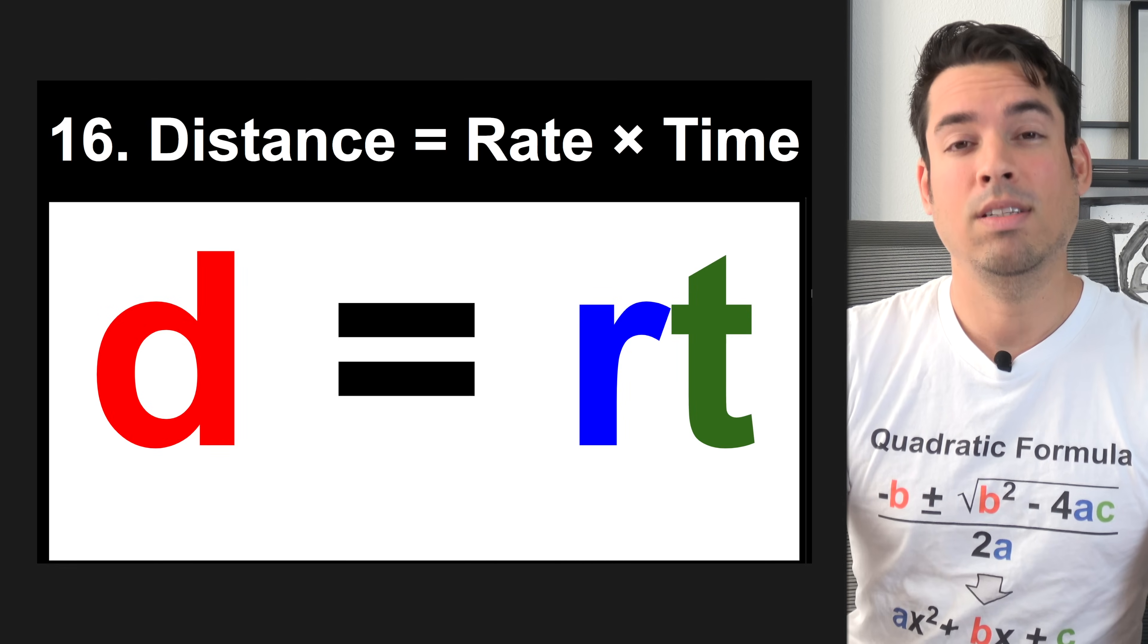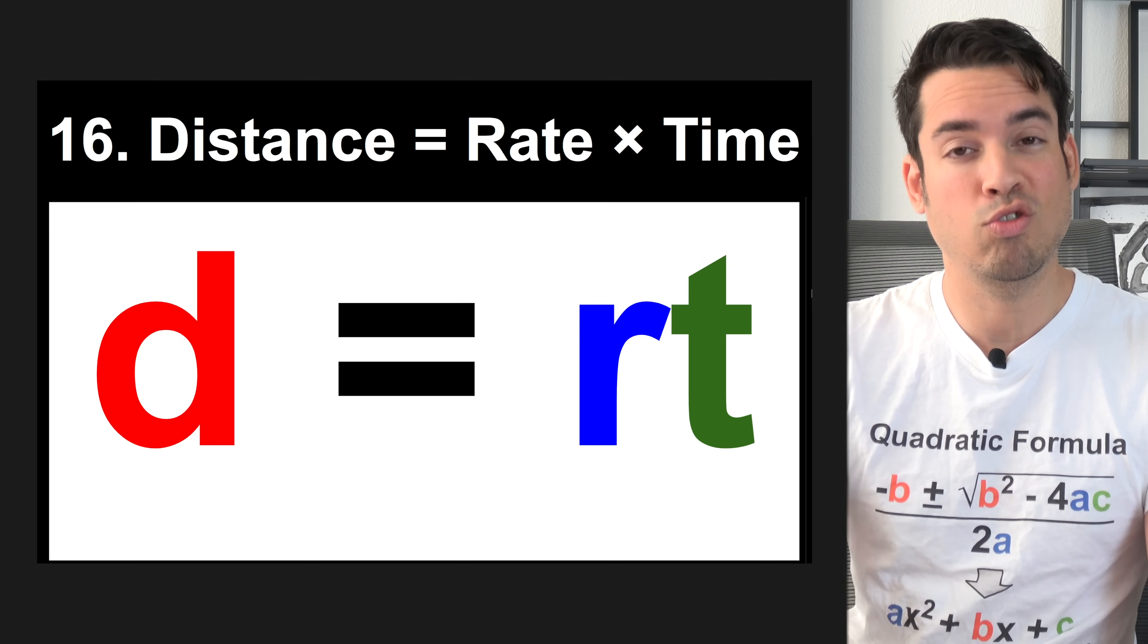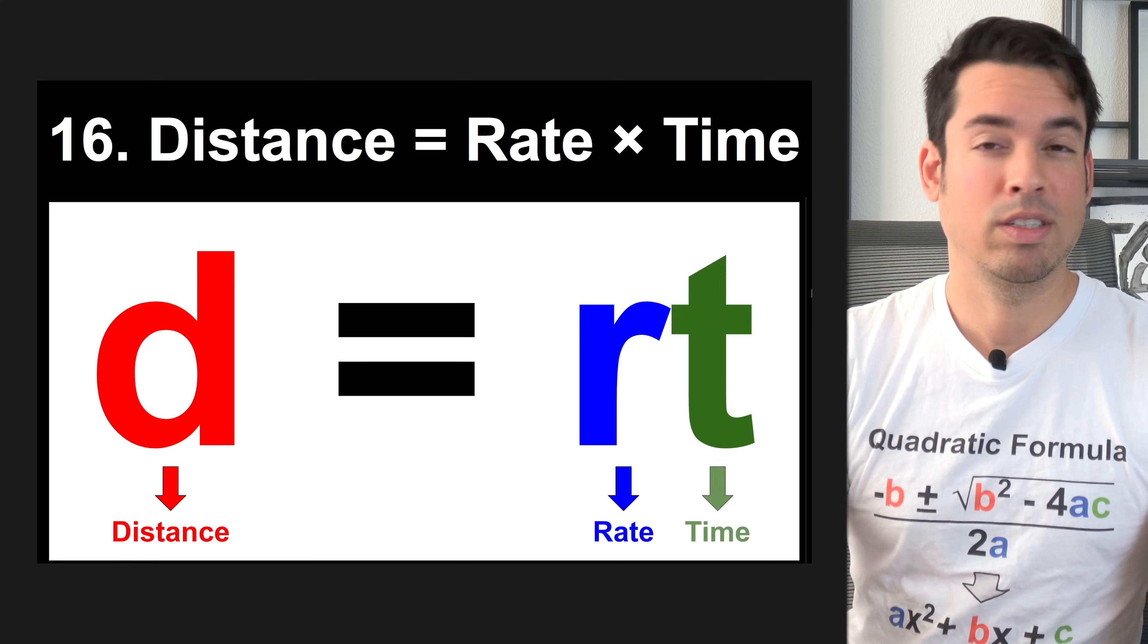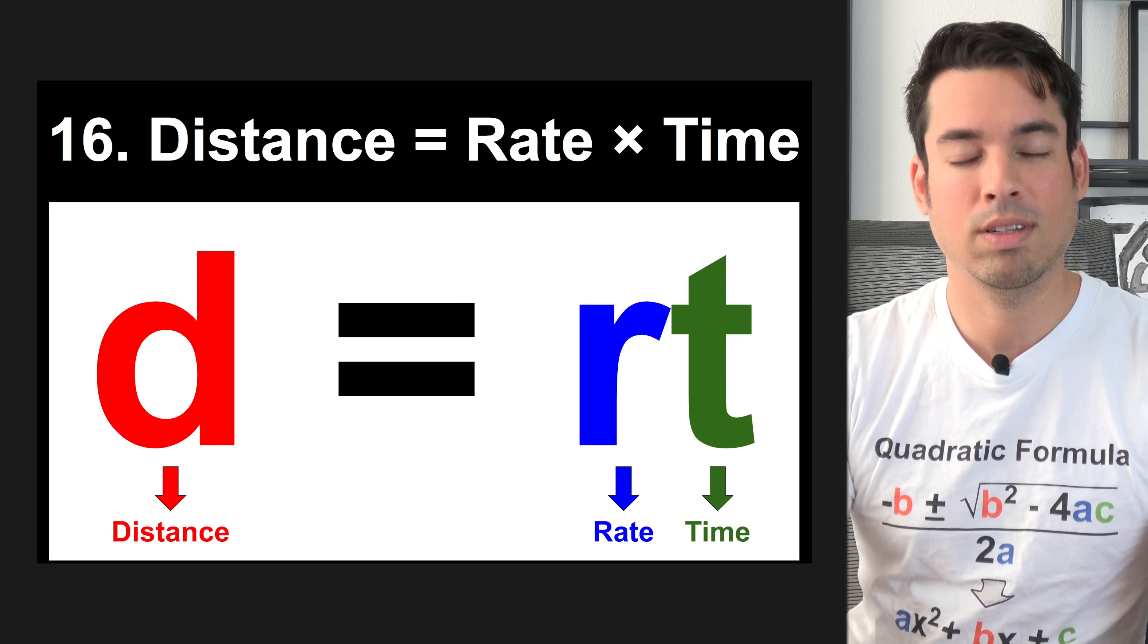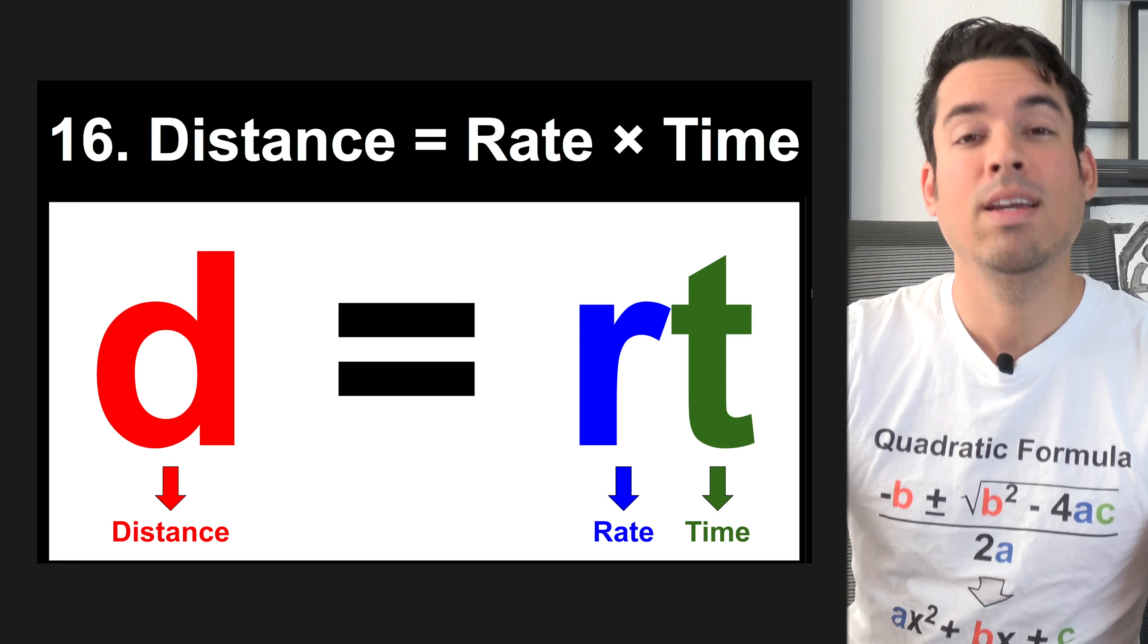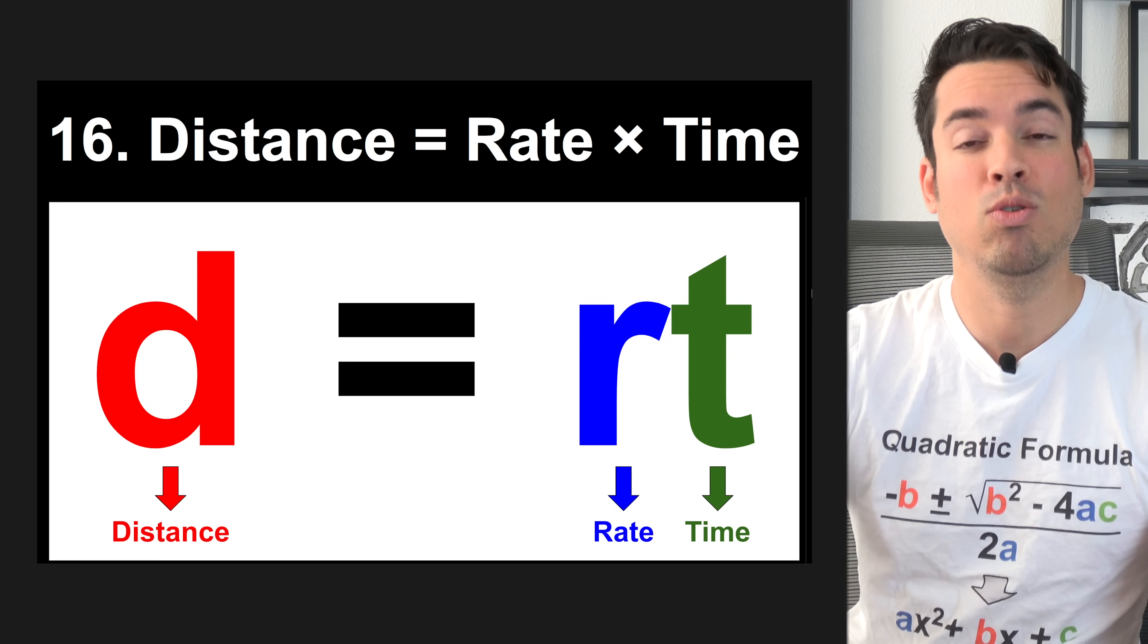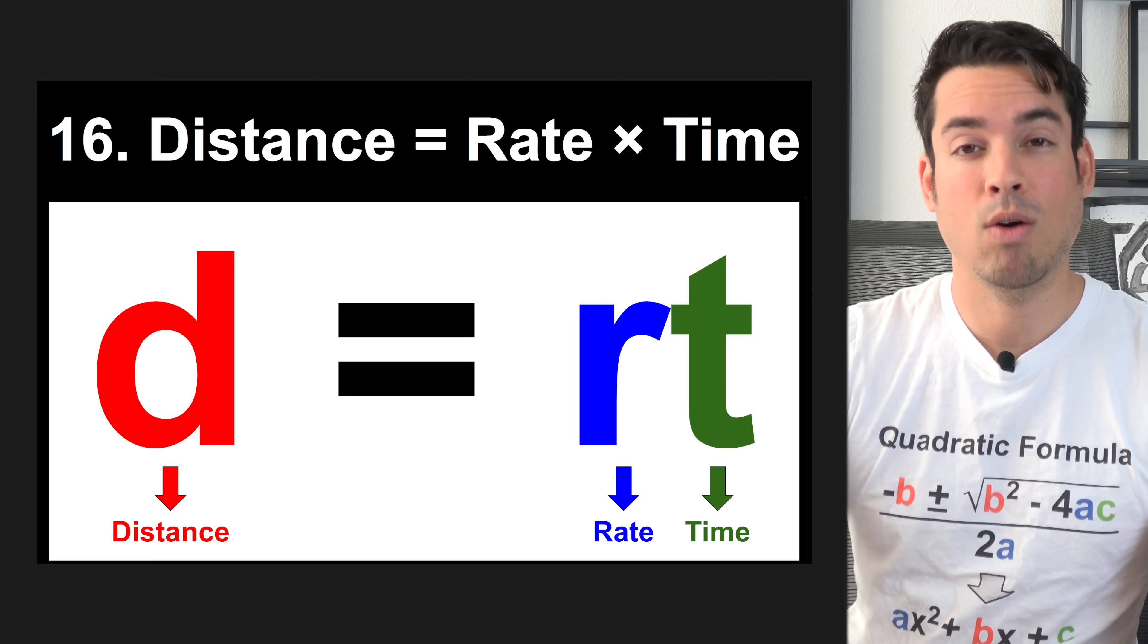Next, we have distance equals rate times time. So d equals rt. It seems simple, but it's really useful when it comes to rate problems. d stands for distance, r stands for rate, and t stands for time. Just a quick note, when you're using this formula, you want to make sure that rate and time are using the same unit of time. For example, if rate is in miles per hour, t should be in hours as well.